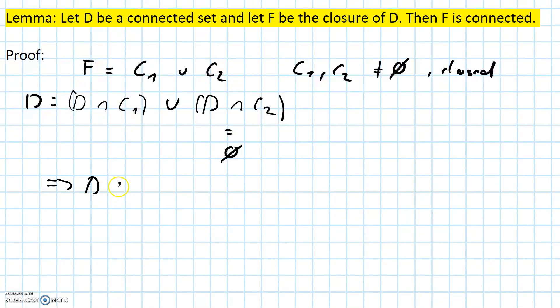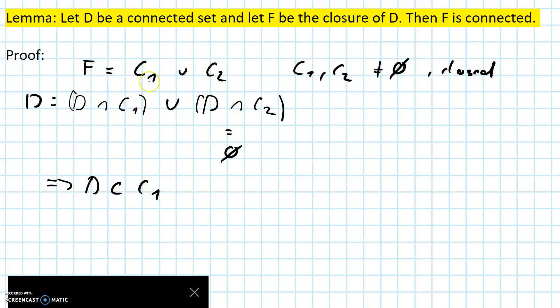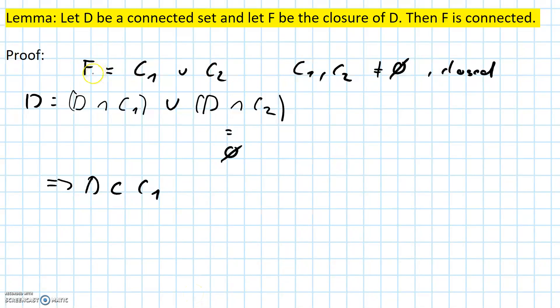D is contained in C1, and C1 is a proper subset of F. And now we reach a contradiction, because we defined F to be the smallest closed subset that contains D, and now we have found a smaller subset, namely C1.